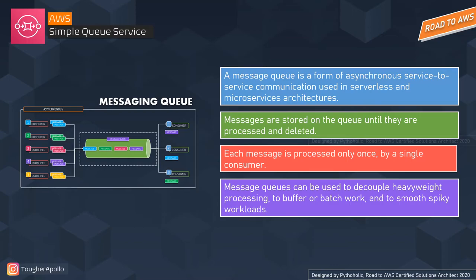There might be other solutions to this problem, but this example shows how messaging queues can be helpful. That's why messaging queues help us decouple. Decouple means to disassociate or separate heavyweight processing — it can also be used as a buffer or to execute batch work. You've very smartly disassociated your application and the alert system using the message queue.